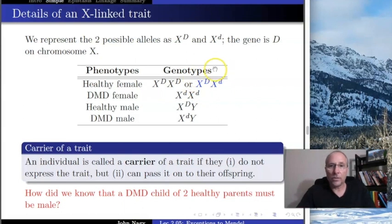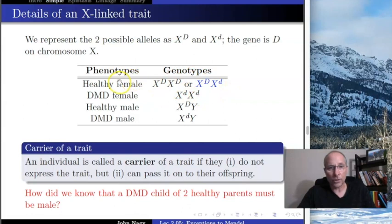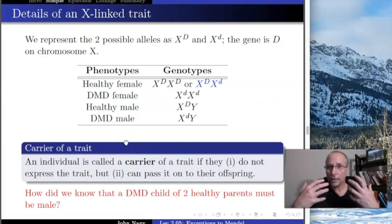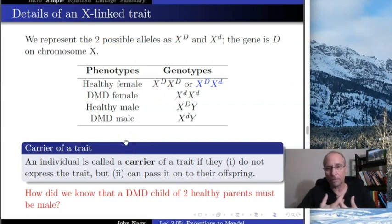Looking at the heterozygous female genotype highlighted here, notice she is different from the homozygous dominant female — she's heterozygous but just as healthy. That makes her what we call a carrier. A carrier of a trait is an individual who does not express the trait but can pass it on to their offspring.